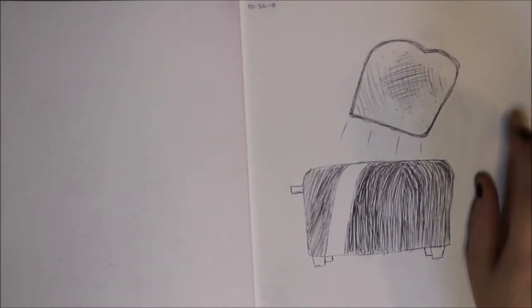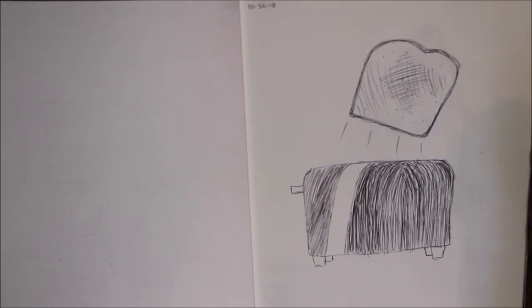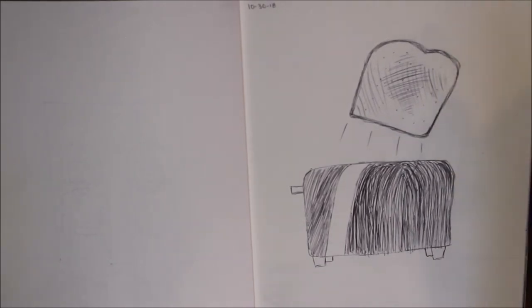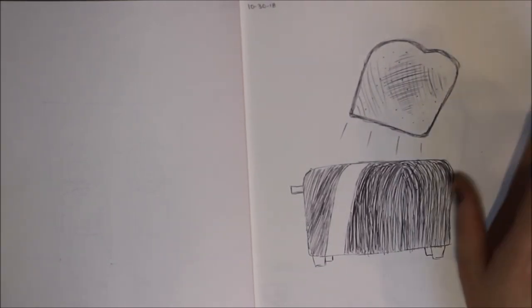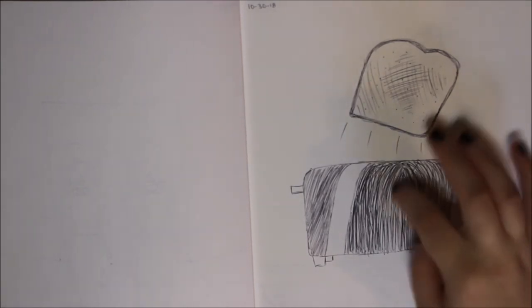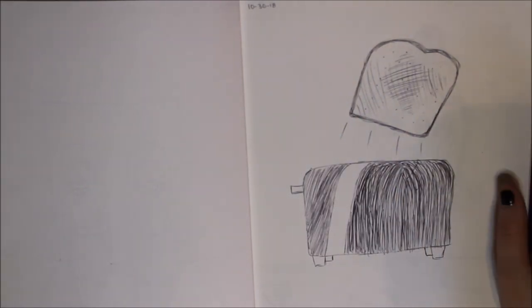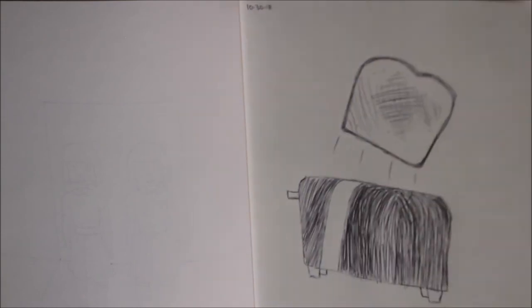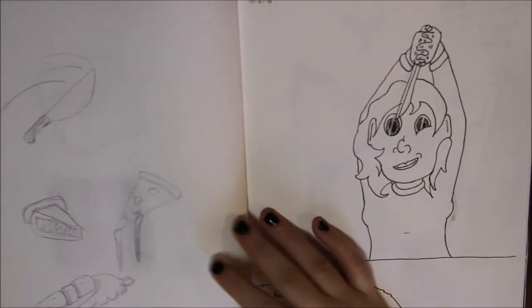This is Day 30 and the word for the day was jolt. I was thinking about how when I have Eggo waffles or toast in the morning for breakfast, when the toast pops up, it scares the ever-loving crap out of me. So I just drew a piece of toast flying out of the toaster because it always gives me a jolt. That was pretty simple. I really enjoyed this one and I think it turned out cute.